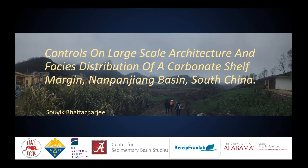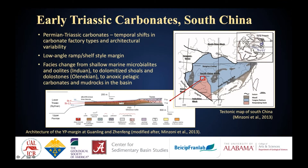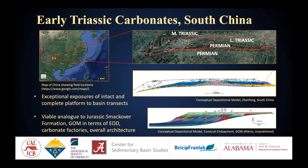My field area is in South China. The red box marks the location in Zhenfeng, Guizhou. The early Triassic carbonates between the Nanpengying Basin in red and the surrounding Yangtze platform in blue form a low-angle ramp or shelf-style margin following a late Permian regional transgression. This mixed carbonate shelf displays variations in carbonate factory types — microbialites, oolites, limemudstones, packstones — as well as variations in architecture, with aggradational to progradational patterns. In the field, a complete platform-to-basin transect is exposed and preserved, and thus it serves as a natural lab to study shelf carbonates.